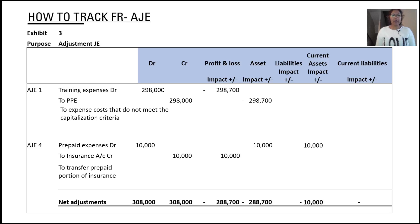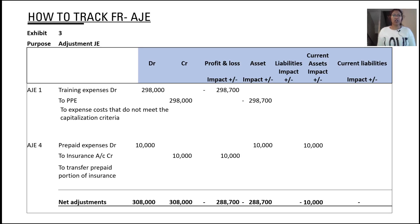What we are capturing here is first the purpose of the exhibit — adjustment journal entries — and then you're writing down the number and the journal entry for the adjustment. For example, suppose there is an R&D expenditure and there is some expense they have capitalized, but it is not correct because it is a training expense.